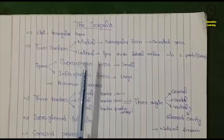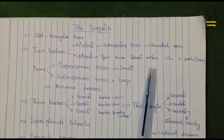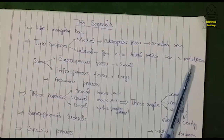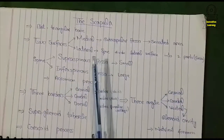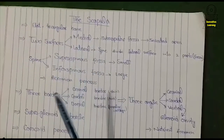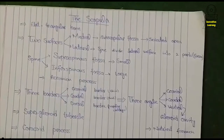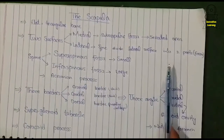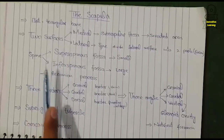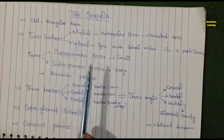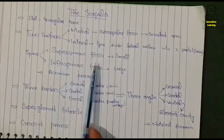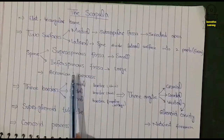A spine is present on the lateral surface of the scapula bone, which divides the lateral surface into two parts or two fossae. The spine divides the lateral surface of the scapula into the supraspinous fossa and the infraspinous fossa.